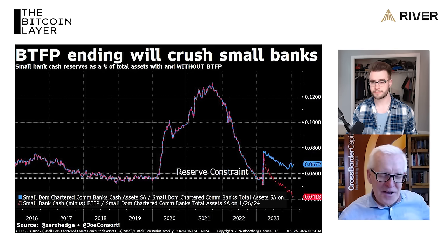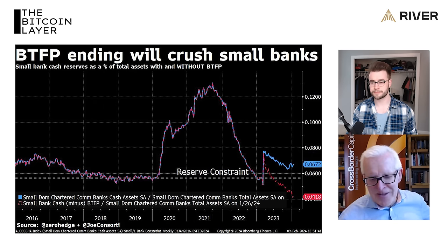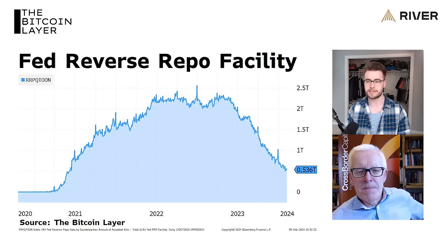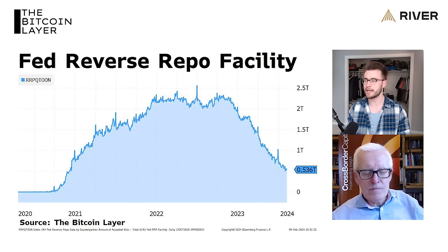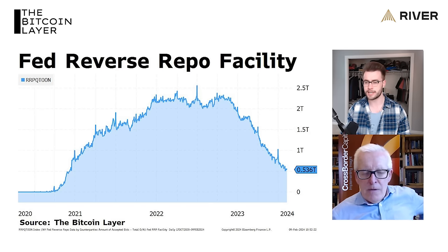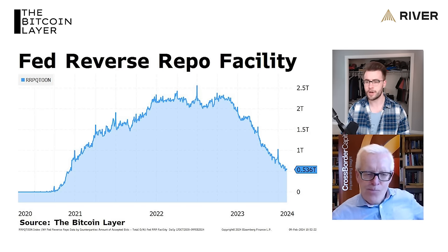In the vein of the Treasury funding itself, I want to ask about the Fed's reverse repo facility. This has acted as something of a cushion to the impact on financial markets of the Treasury's funding — capital has been able to come out of here and go into new Treasuries. This looks like it's slated to run out very soon. What are the implications of the RRP draining down to zero?